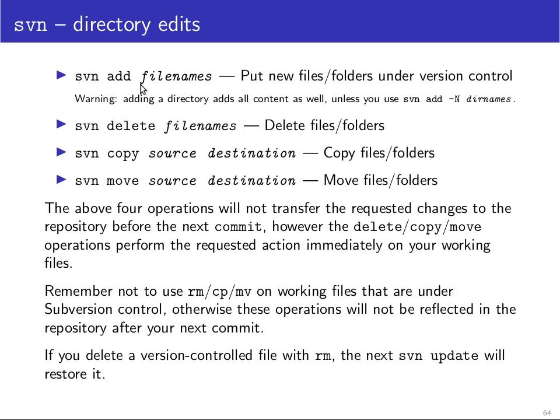svn add followed by one or more file names puts a new file or an entire folder under version control. One warning here: if you add a directory, then by default it will add all content in the folder as well, and this may contain compiler output files or backup files that you don't actually want added. In that case it's usually advisable to use svn add -N, such that if you list a directory, only the directory itself will be added. You can then go into the directory and add individual files from there without recursively adding everything.